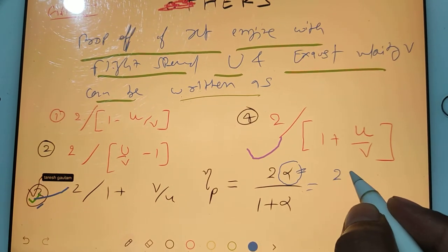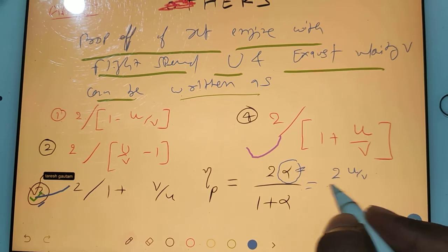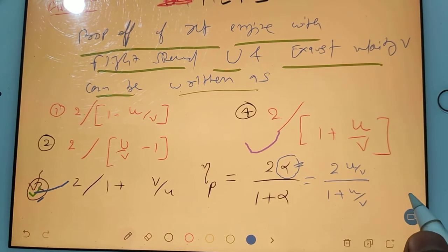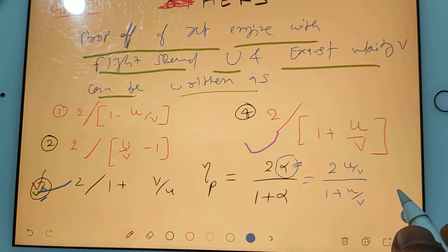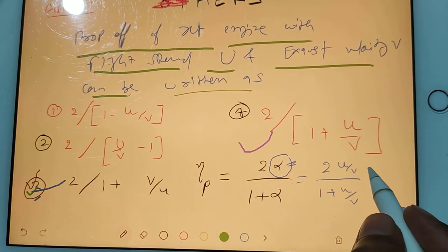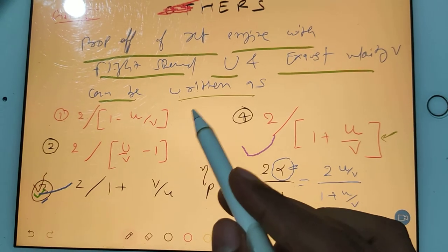2u/v divided by 1+u/v. Now you understand, in this case any option is not matching. Best part to solve this, you solve the main formula itself, divide this main formula by alpha.